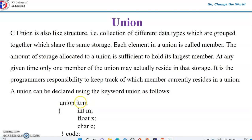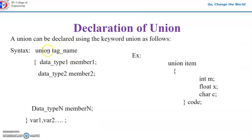The union keyword is followed by a union tag, which is similar to a structure tag. For example, a union named 'item' with members int m, float x, and char c, where 'code' is a variable of type union item. This indicates that 'code' can be either integer m, float x, or character c. The tag name is optional if variables are listed in the declaration itself.